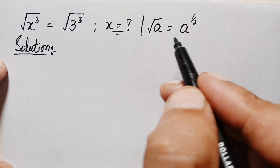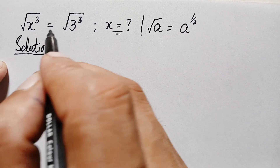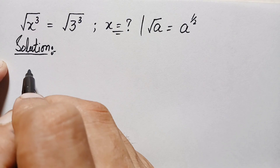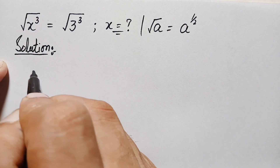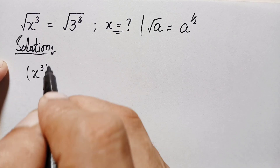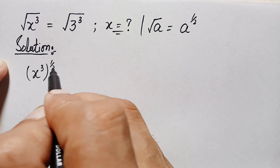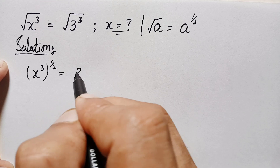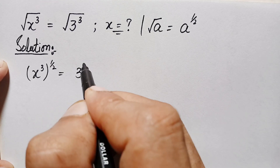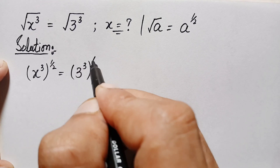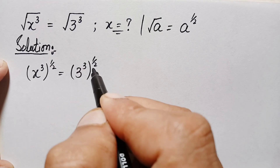Using this property, we can rewrite both sides. The left side becomes x cubed raised to the power 1/2, and the right side becomes 3 cubed raised to the power 1/2.